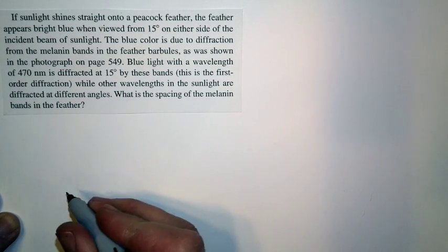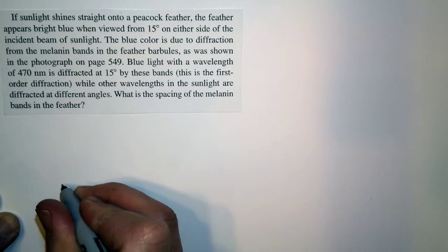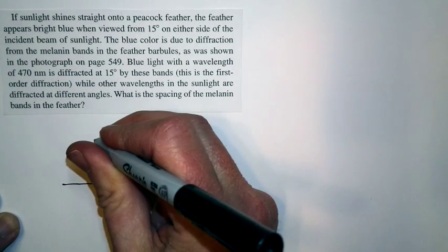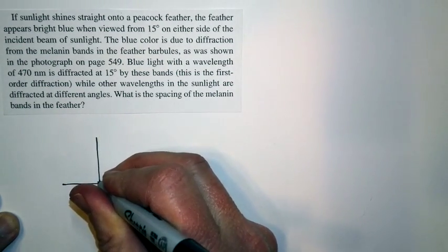Here's an example. If we have a peacock feather, and sunlight shines directly on it, so we have a beam of sunlight that comes in and hits directly on the feather.